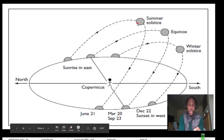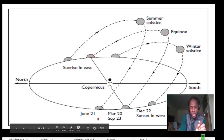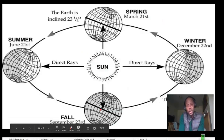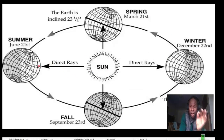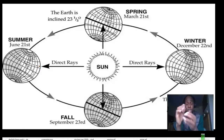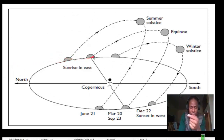Conversely, during the summer, it rises northeast — not at the east, but a little bit north of east — and sets northwest. That is because during the summer solstice, the sun is overhead at the Tropic of Cancer. The Tropic of Cancer is 23.5 degrees north of the equator. So, because it's north, the sun rises a little bit northeast.